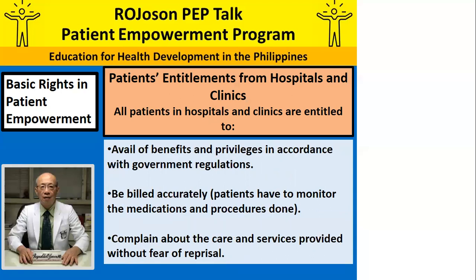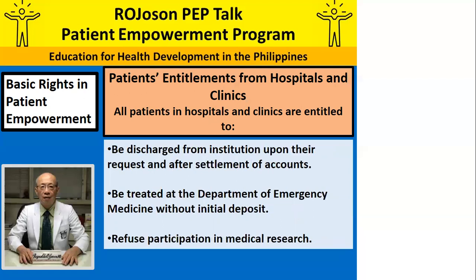Patients have rights to avail of the benefits and privileges in accordance with government regulations. They are entitled to be billed accurately, so patients will have to monitor the medications and procedures done. Patients are entitled to complain about the care and services provided without fear of reprisal. They are entitled to be discharged from institution upon request and after settlement of accounts, to be treated at the Emergency Room without initial deposit — that's the law — and to refuse participation in medical research.